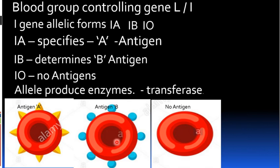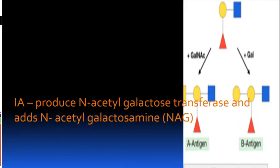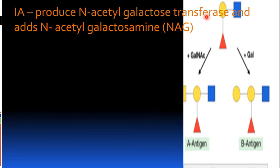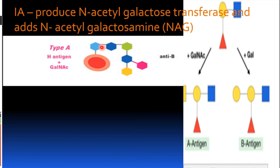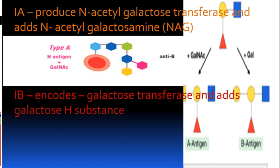Each allele IA and IB produces an enzyme. The IA allele produces N-acetylgalactosamine transferase enzyme. This enzyme adds N-acetylgalactosamine to the precursor substance, producing the A antigen structure.